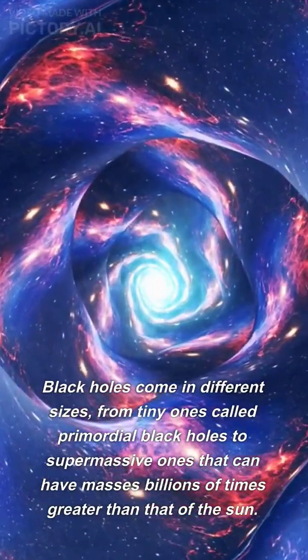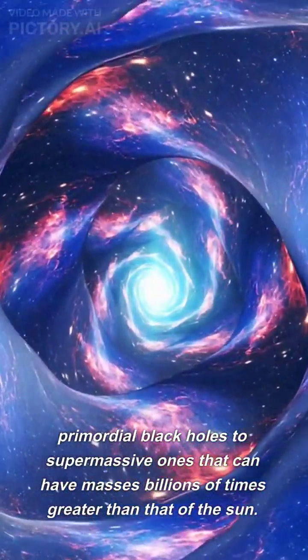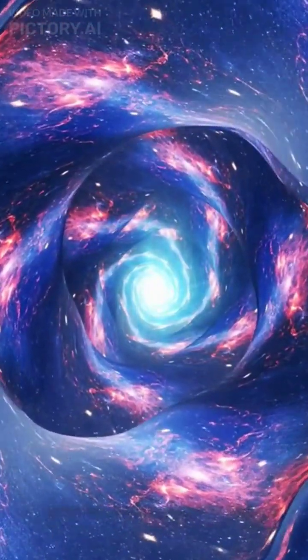Black holes come in different sizes, from tiny ones called primordial black holes to supermassive ones that can have masses billions of times greater than that of the sun.